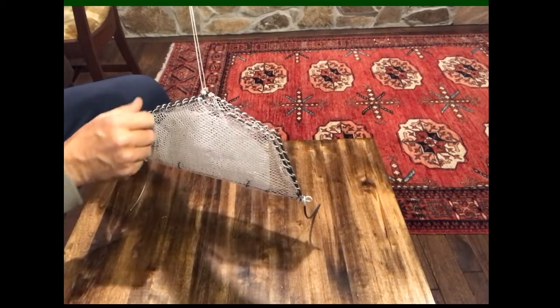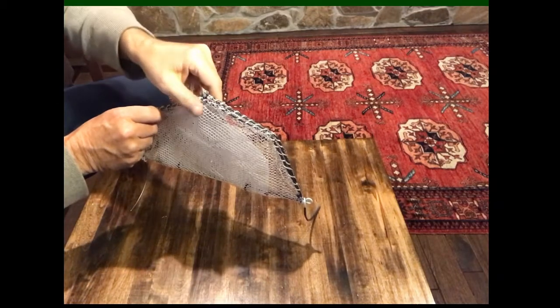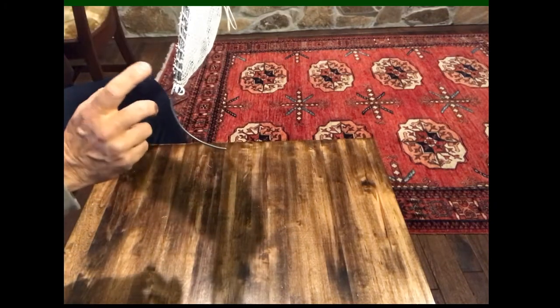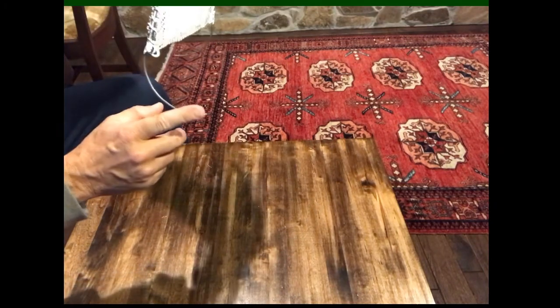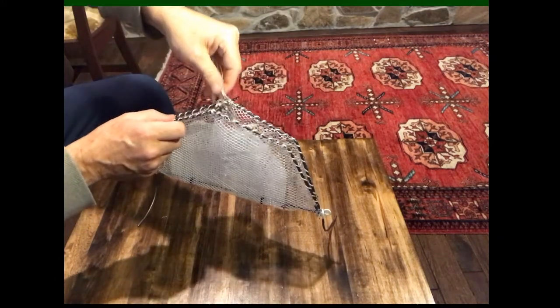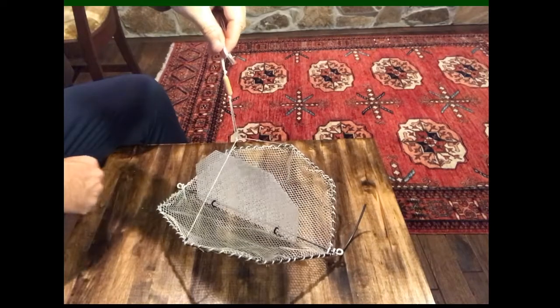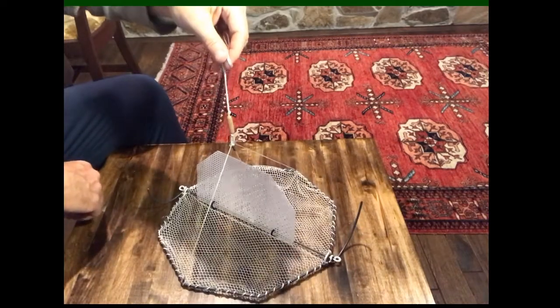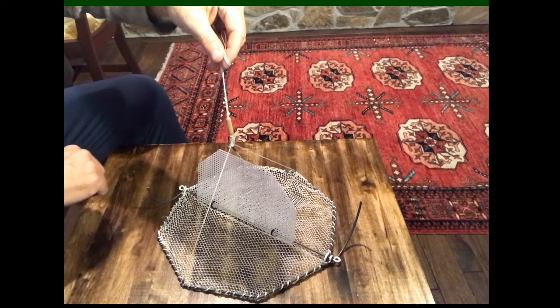The trap has two extensions on the bottom of each jaw, one on each jaw, that we call deflectors. Those things cause the net to open when it hits the bottom by forcing the jaws apart and laying the net flat on the bottom.